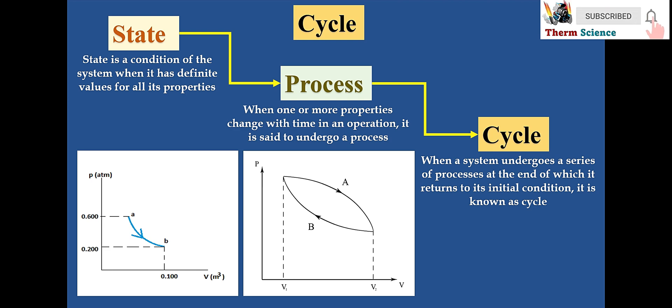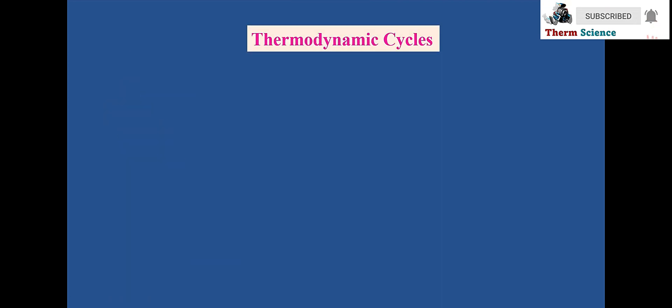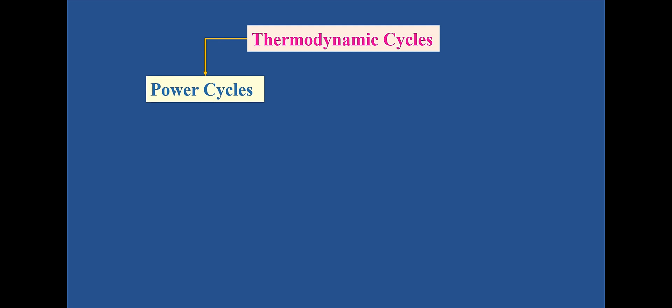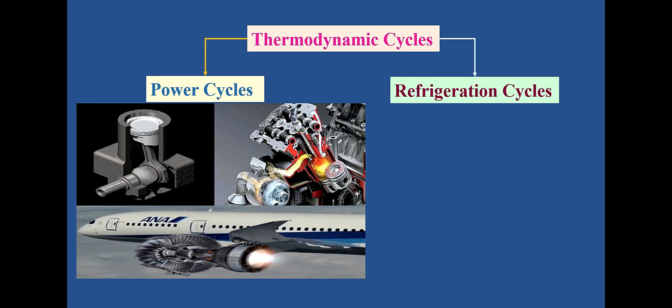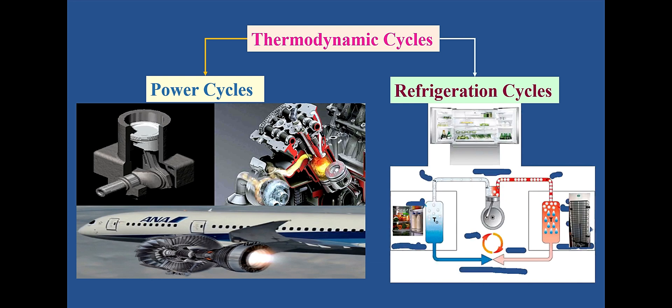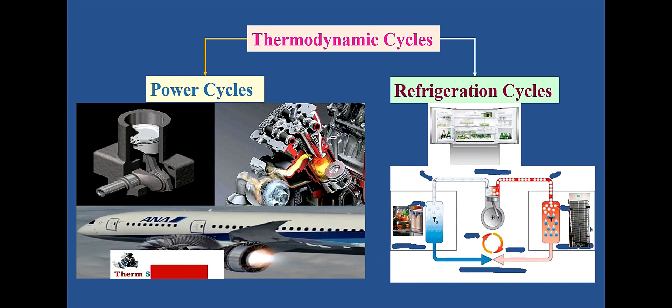Let's summarize thermodynamic cycles. Cycles that operate under thermodynamic principles are called thermodynamic cycles — that is, heat to work and work to heat. Thermodynamic cycles are majorly classified as two: the first is the power cycle, which produces power as the output, and the second is the refrigeration cycle, which produces a refrigeration effect as the output.